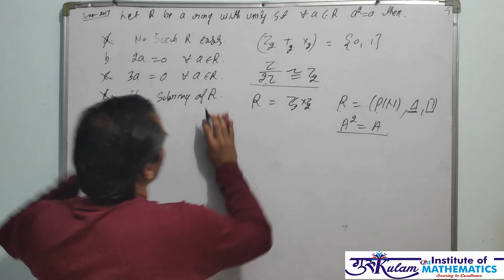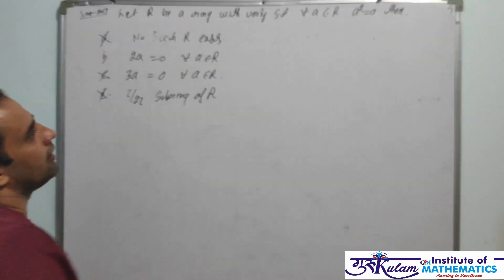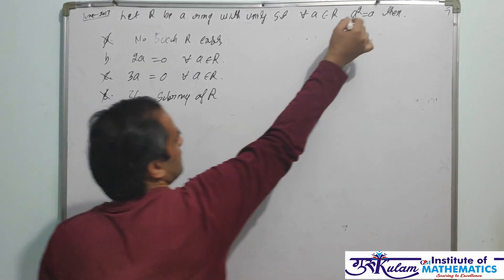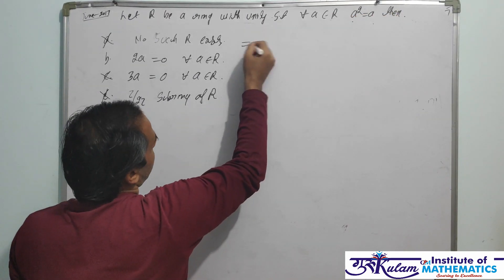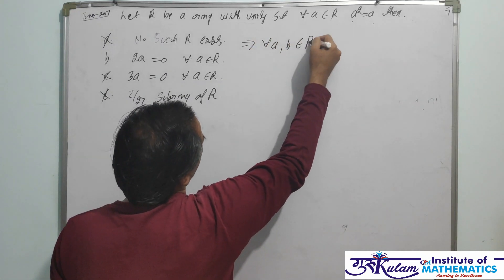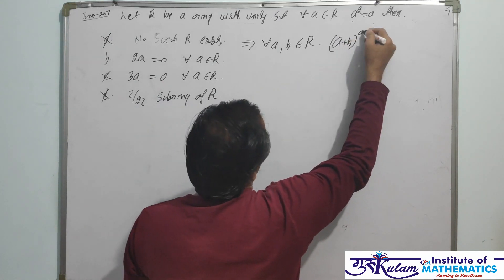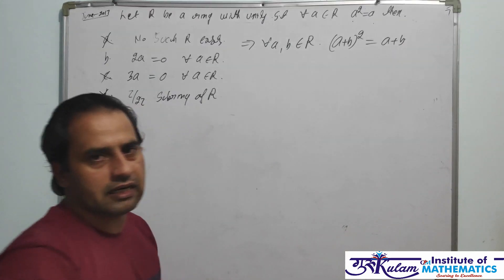What about the second option? Some properties with respect to a ring with unity in which every element is idempotent. This implies for all A and B belongs to R, (A+B)² = A+B.